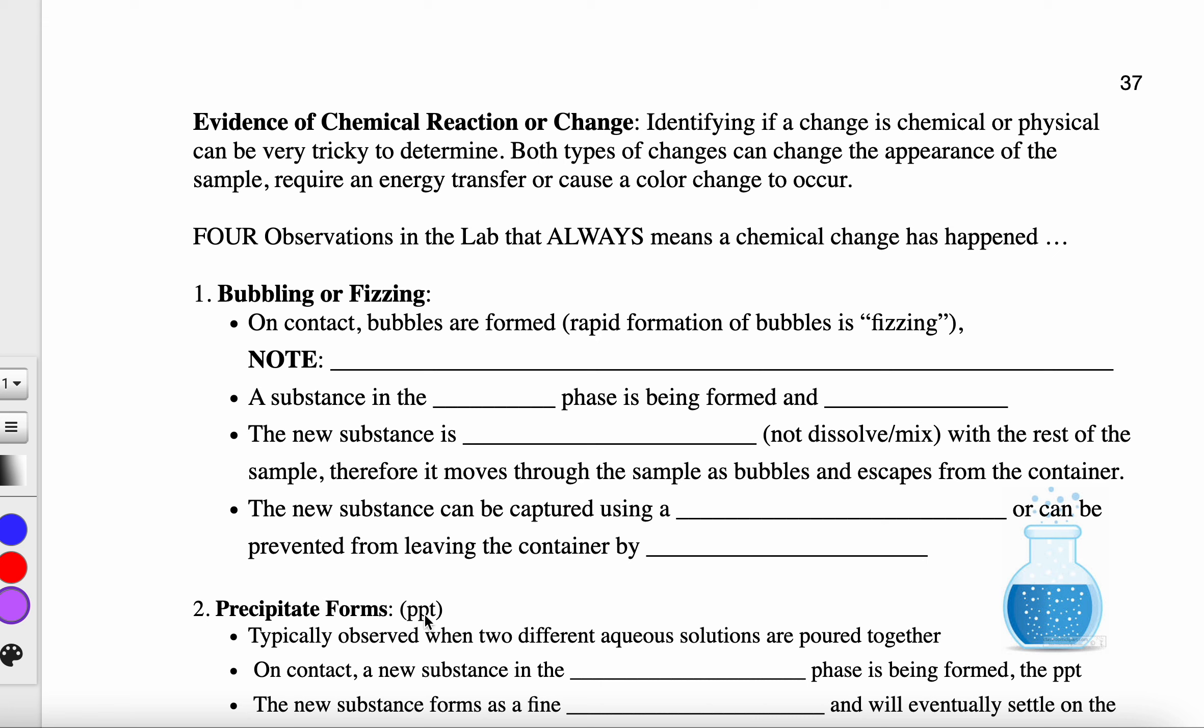This explains evidences of a chemical reaction. As I've stated before, identifying a chemical or physical change can be tricky and it takes time to learn how to look at the data and analyze it. In order for it to be a chemical change, we typically look for one of these four items to have occurred.